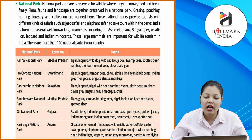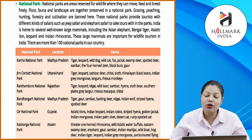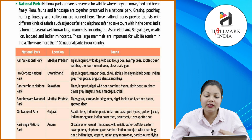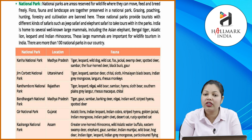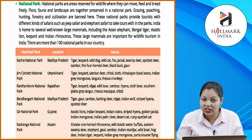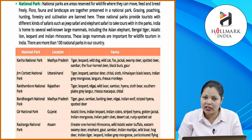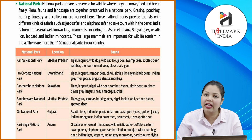Wildlife sanctuaries are areas reserved exclusively for the protection of animals. Killing, poaching, and capturing of animals is strictly prohibited here. Wild animals are protected in their natural habitat. Animals are not as comfortable in a zoo as they are in a sanctuary — that is why sanctuaries have been established. Some wildlife sanctuaries in India include: Sultanpur Bird Sanctuary, Haryana; Mudumalai Sanctuary, Tamil Nadu; Periyar Sanctuary, Kerala; Gir Wildlife Sanctuary, Gujarat; Dachigam Sanctuary, Srinagar; Kaziranga Sanctuary, Assam.